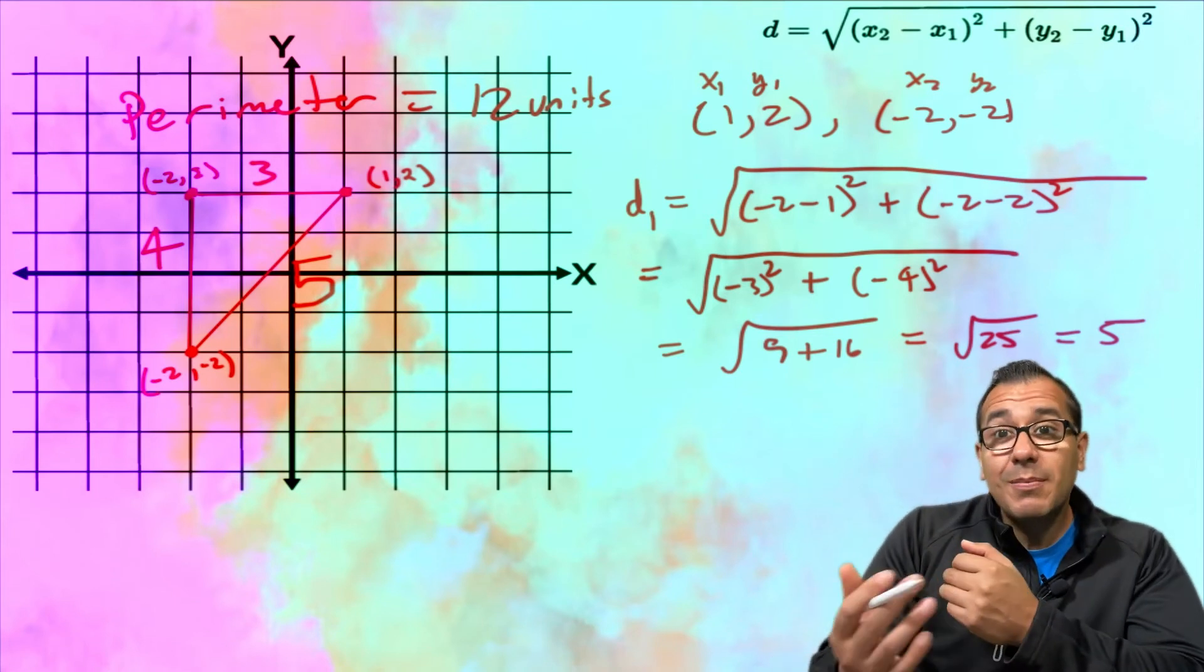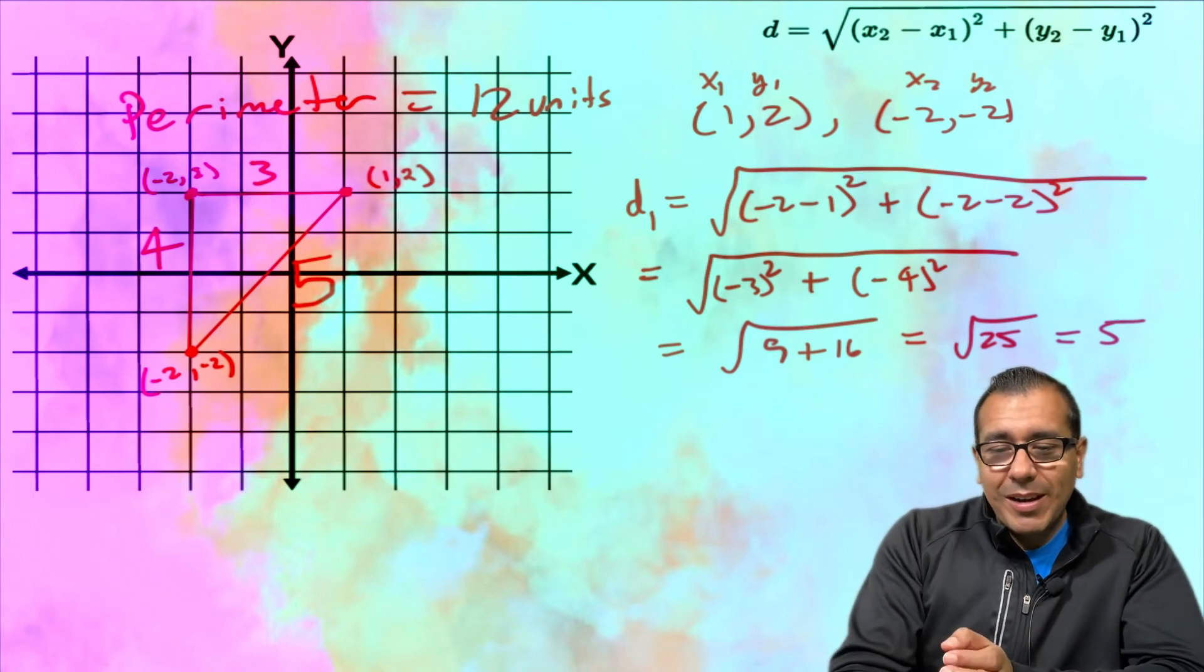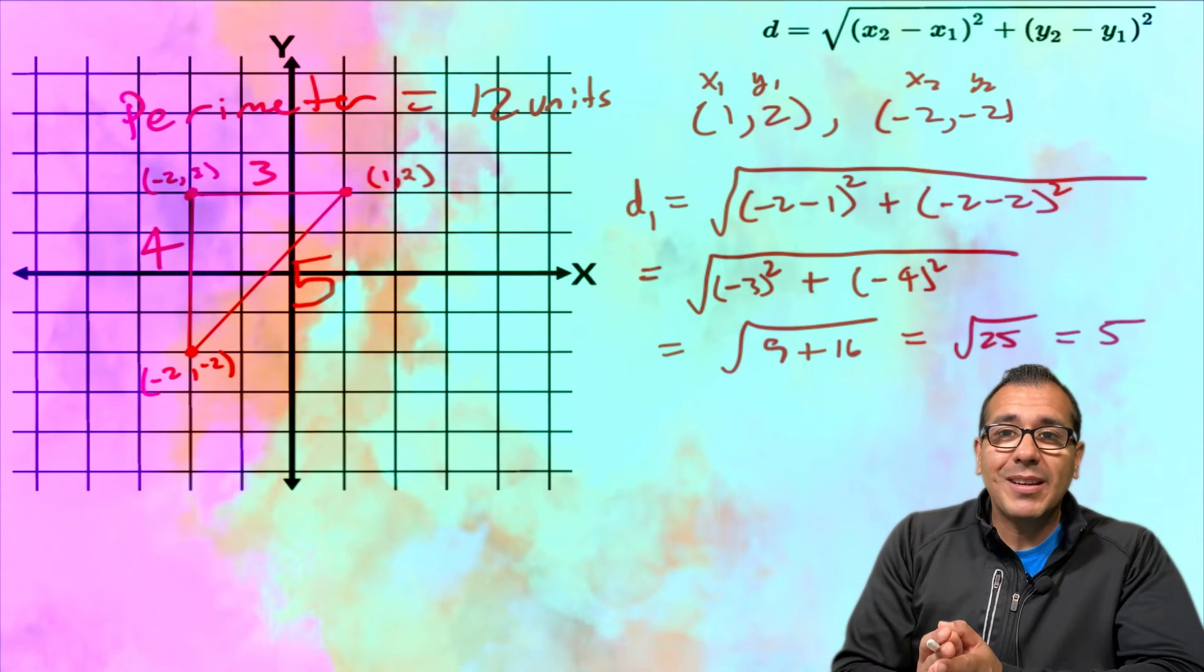All right, but again if they give you a nice triangle like this it does make sense to actually just count the number of units. And so here I could have just counted 1, 2, 3 units and that's in fact what I did in this case.